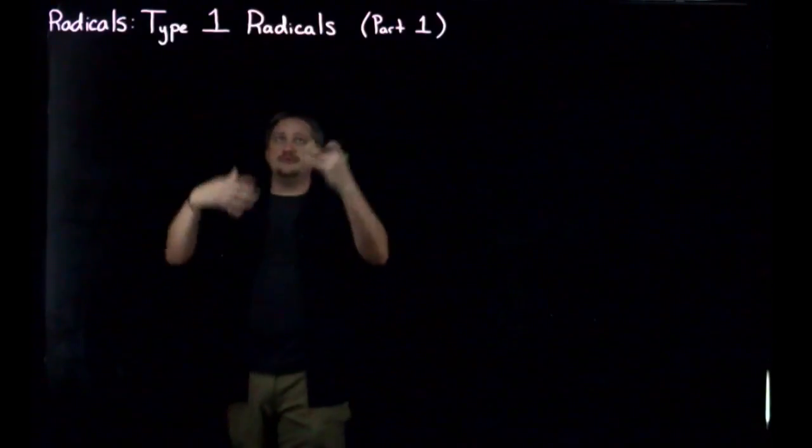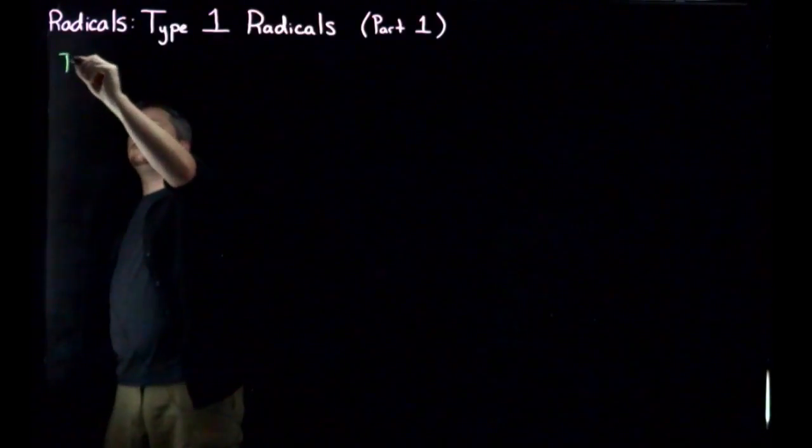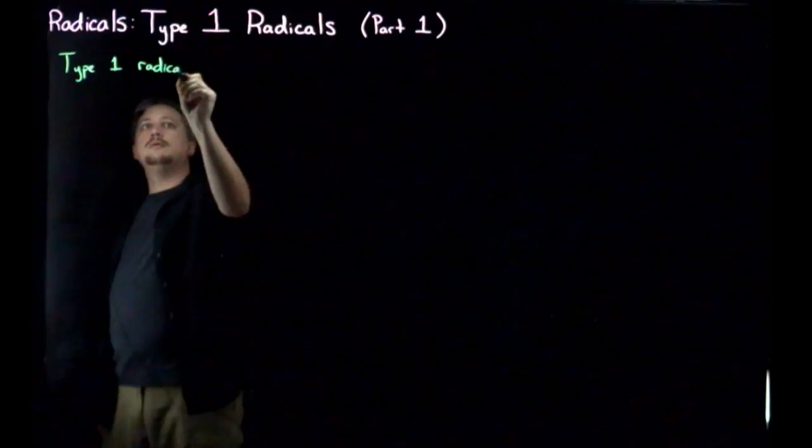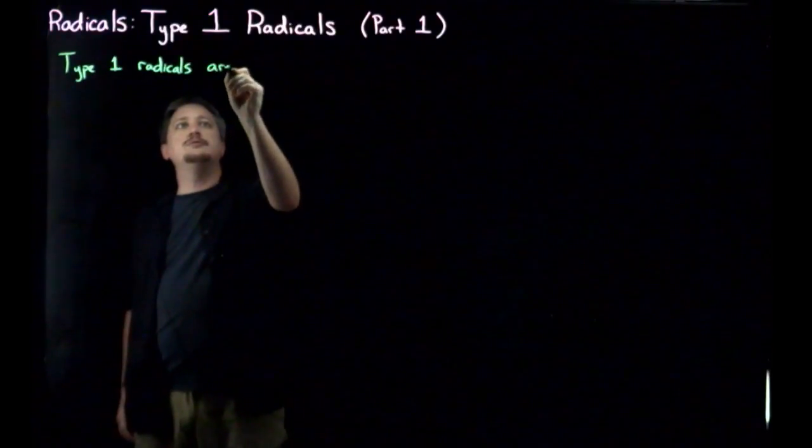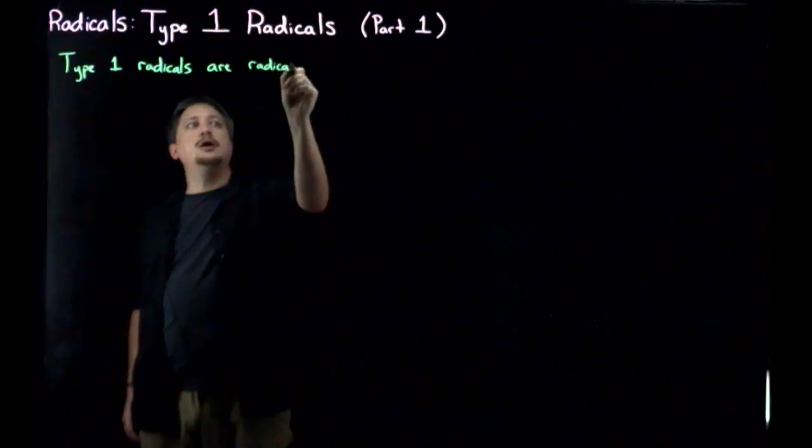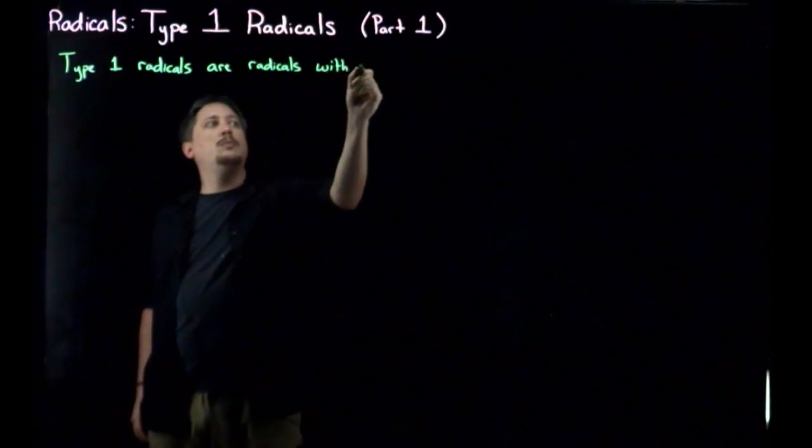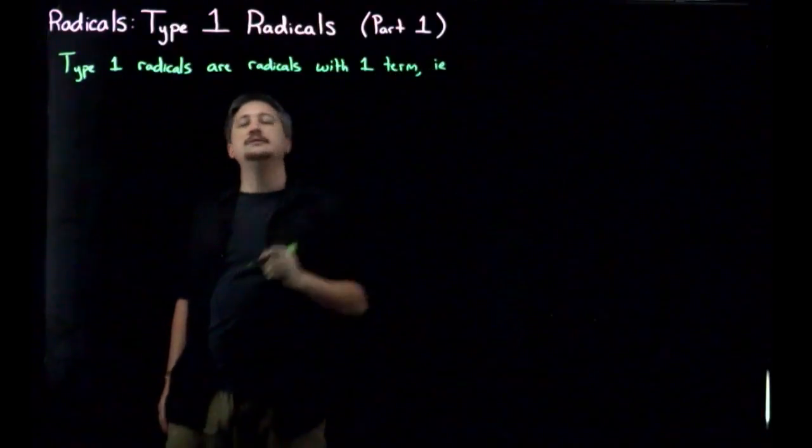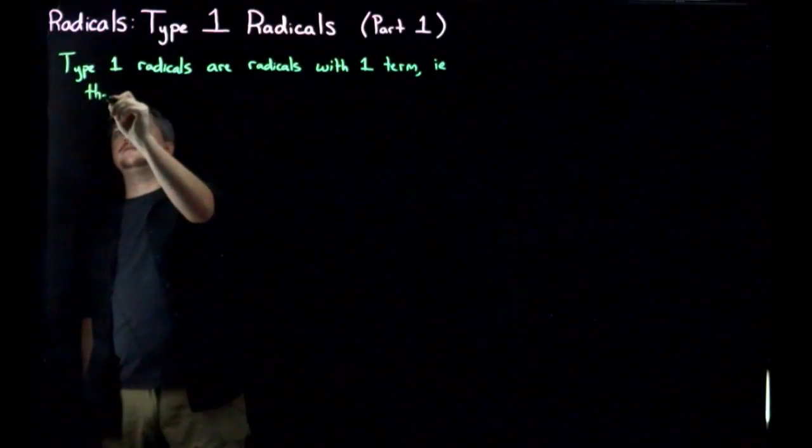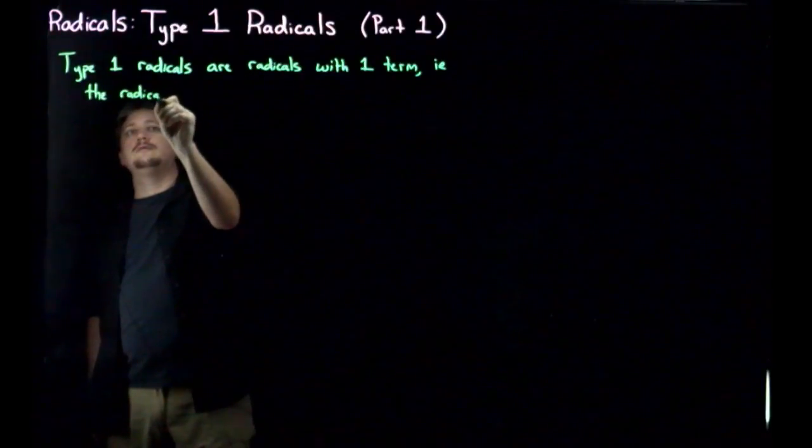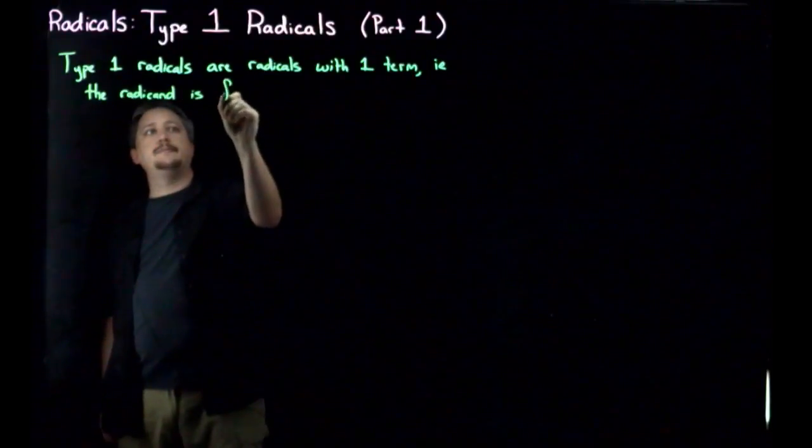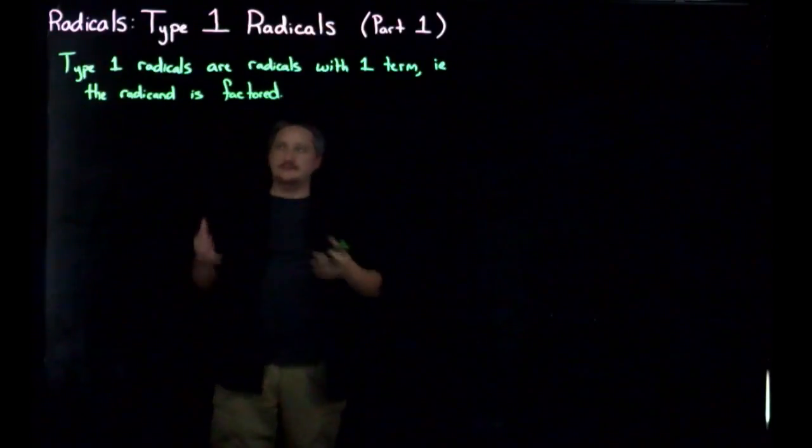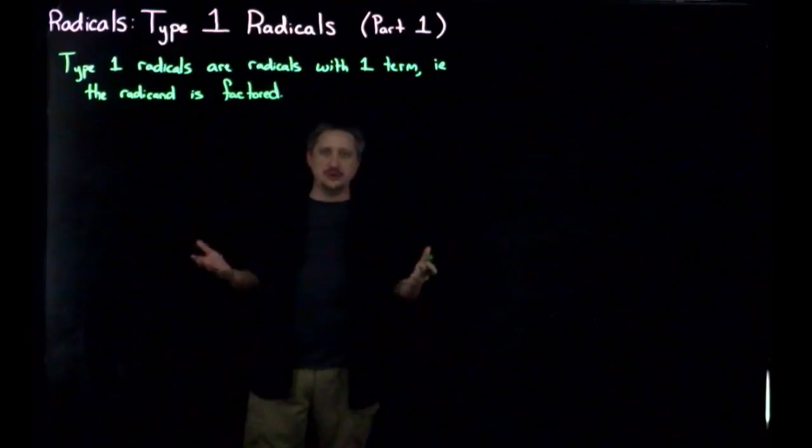Just to recall, Type 1 radicals are radicals with one term, that is, the radicand, the inside, is factored. The easiest way to explain this is to just do an example.